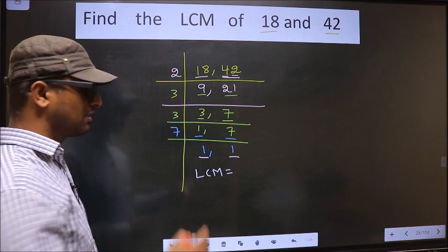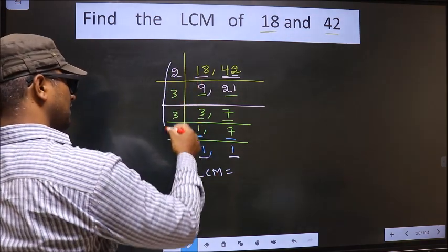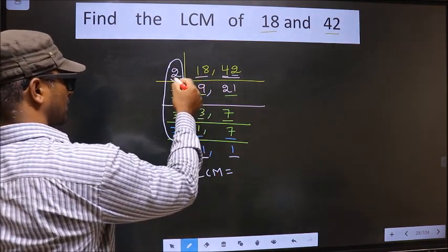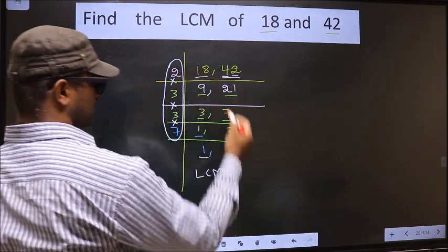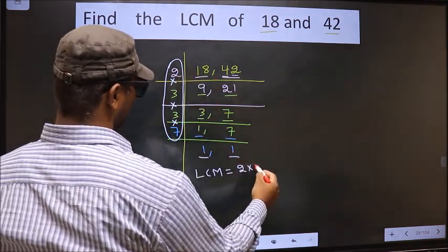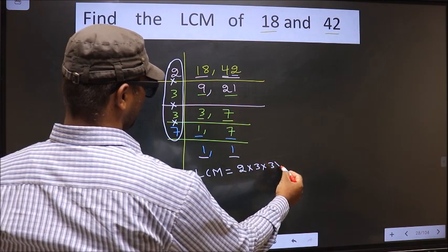LCM is the product of these numbers. Okay. Product of these numbers. That is 2 into 3 into 3 into 7.